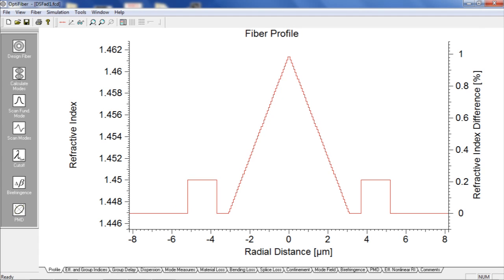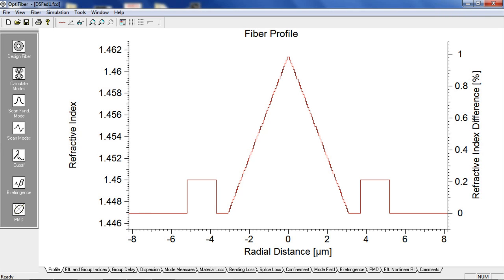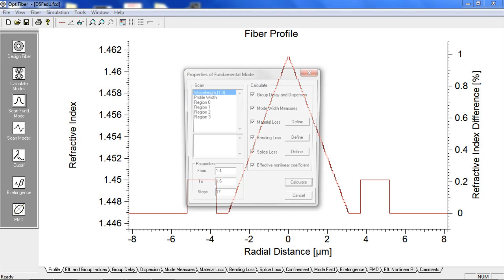OptiFiber can plot dispersion and other quantities over other parameters. The parameters are selected from the Properties of Fundamental Mode dialog box, which is activated by the Scan Fundamental Mode button.